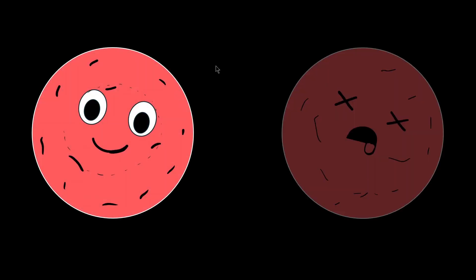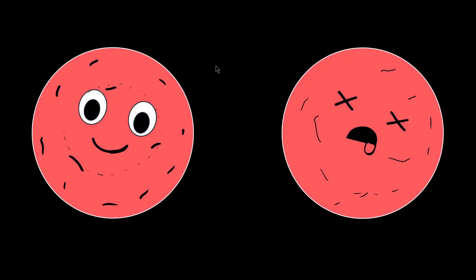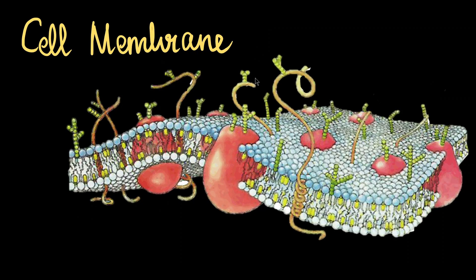Between the life of your cell and its death, there is a very thin line. It's a literal line — thinner than a strand of hair, 8000 times thinner than paper. It's flexible, and it's the reason your cells don't burst or stop. Let's talk about cell membrane.